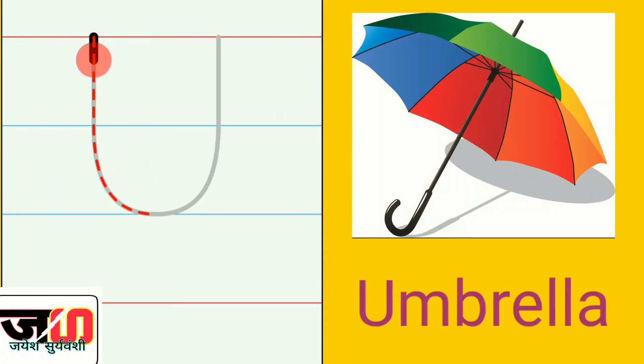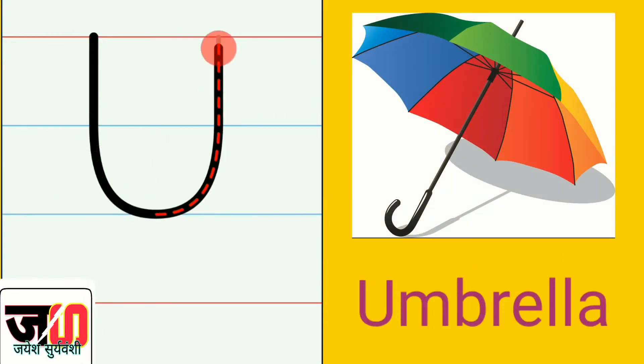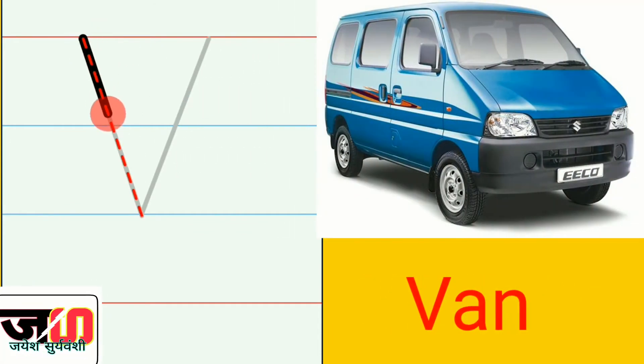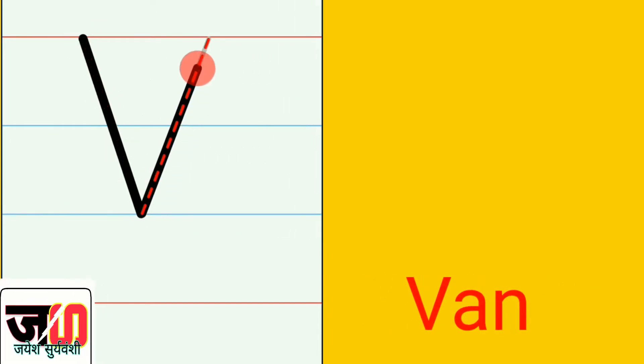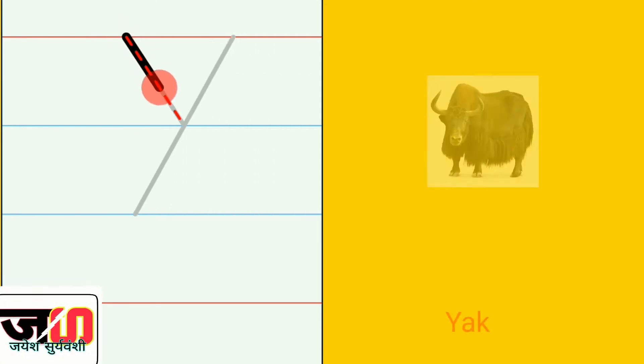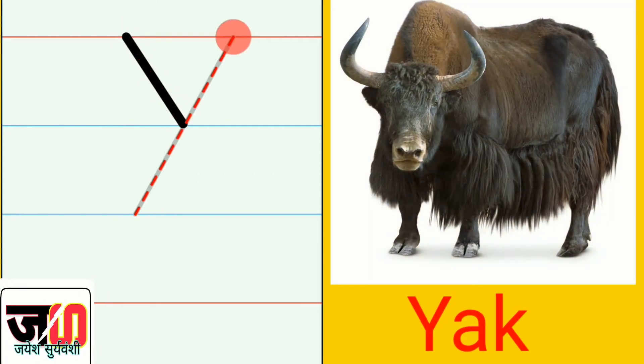U, U for umbrella. V, V for van. Y, Y for yak.